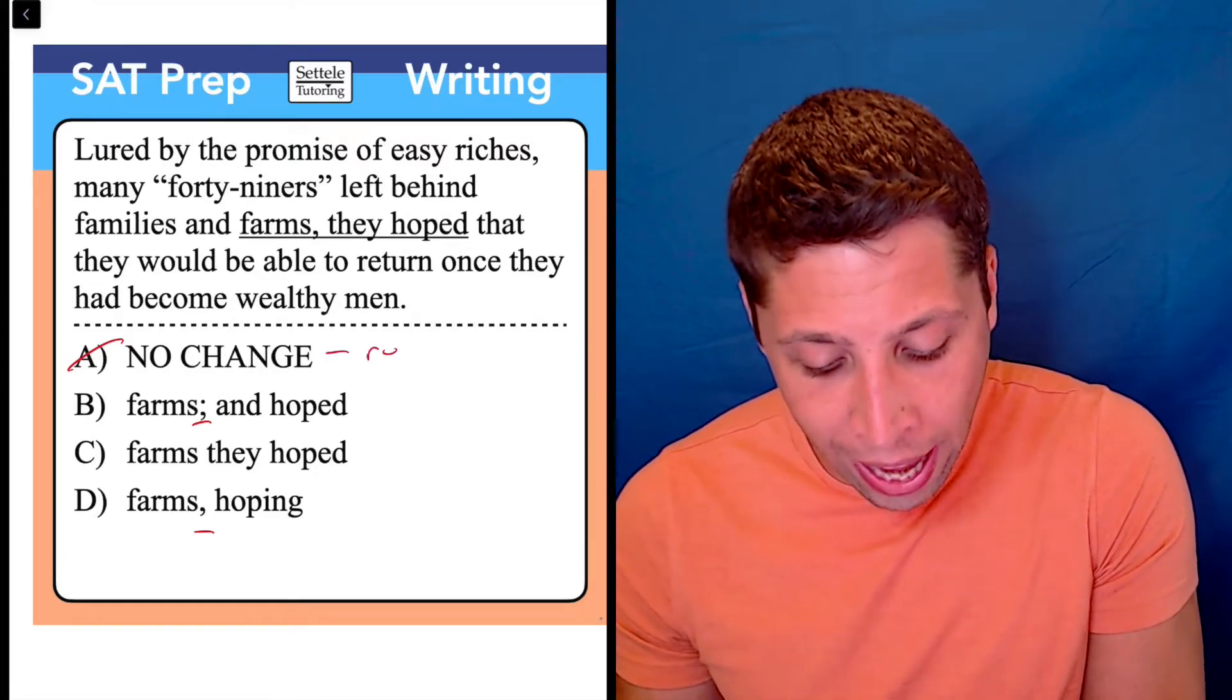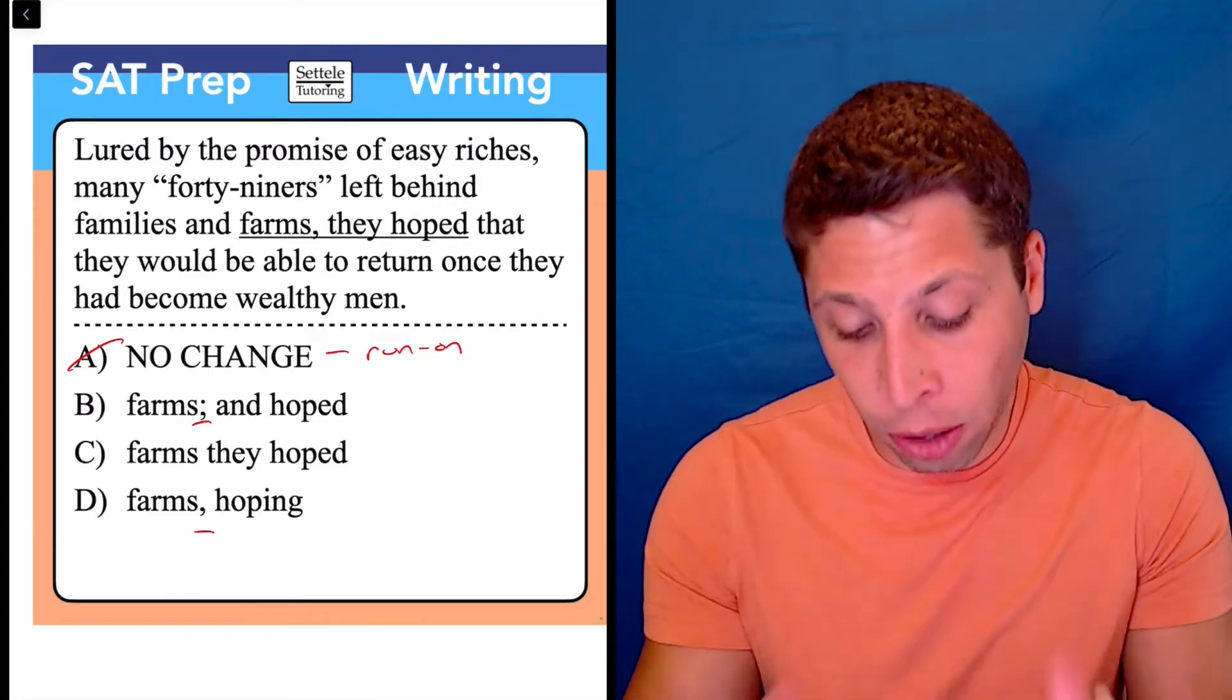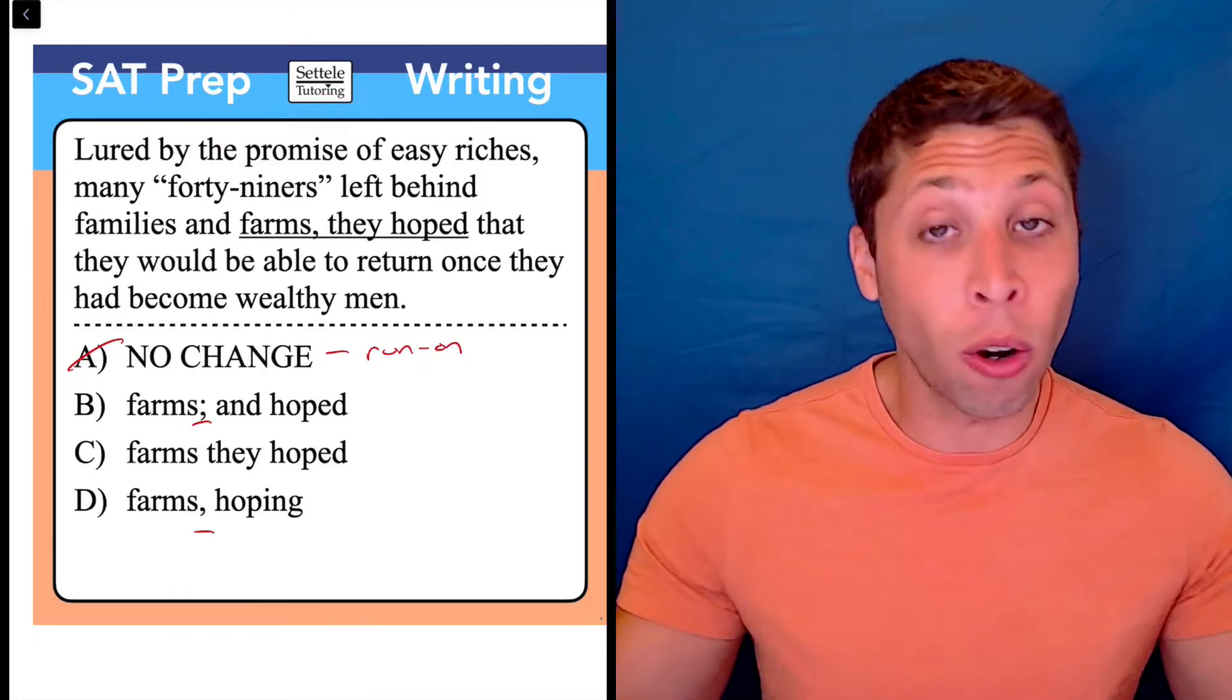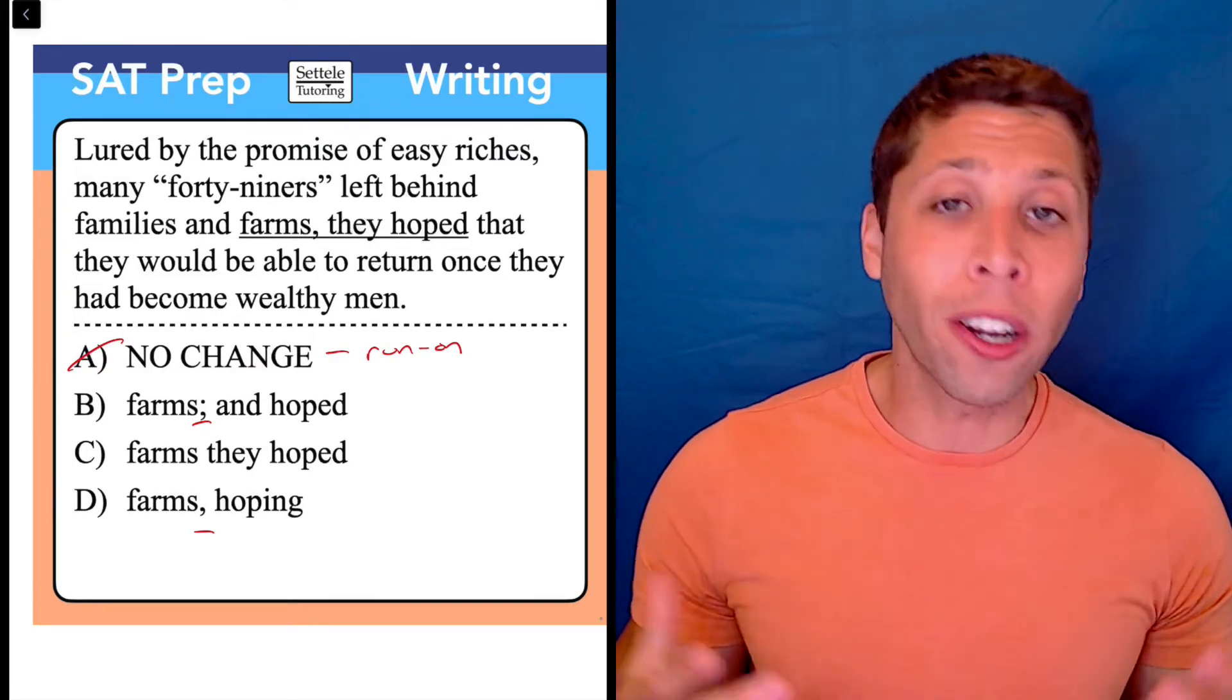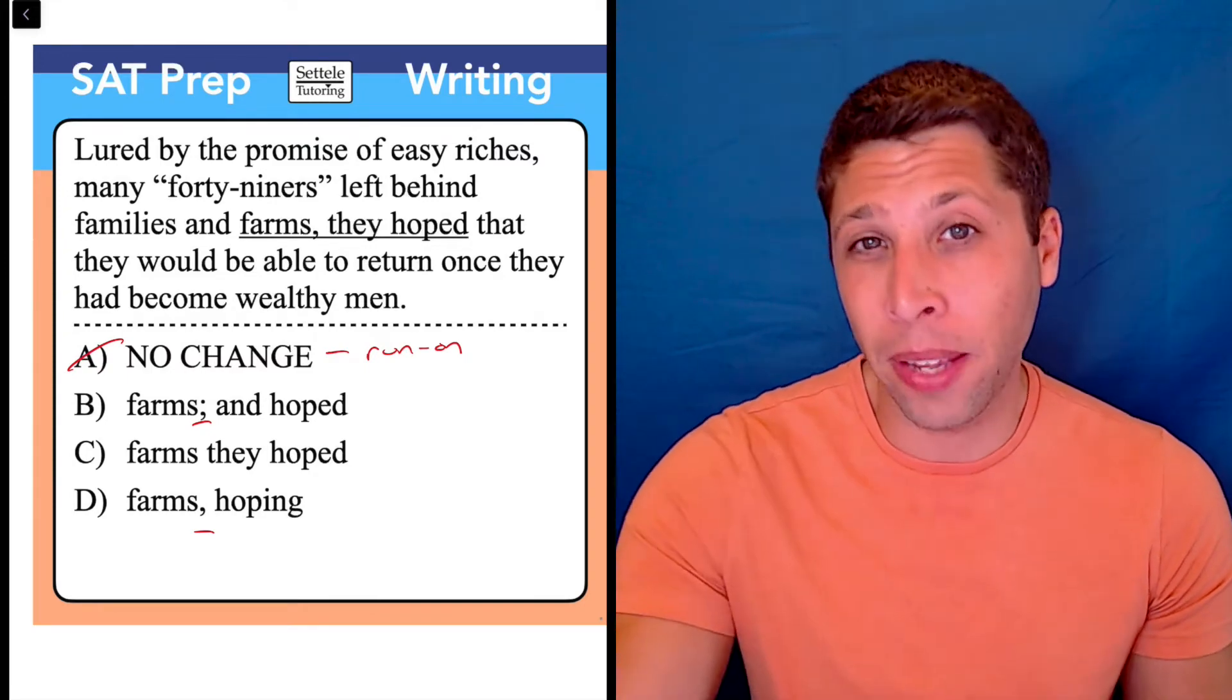In choice A, we have a run-on sentence. Both the beginning part and the part starting with 'they hoped' could be their own sentences that stand alone. We are not allowed to join those two things with just a comma. We would need something extra.